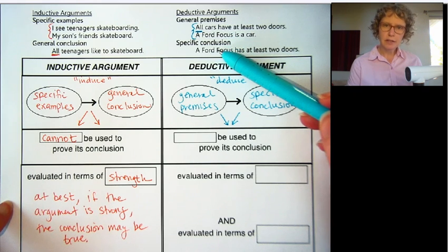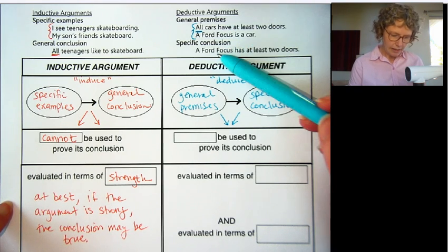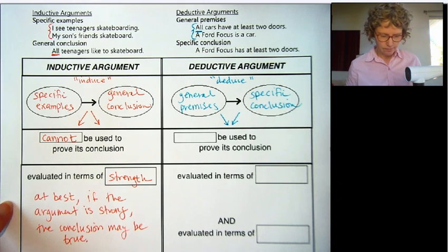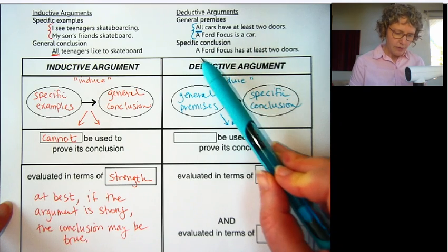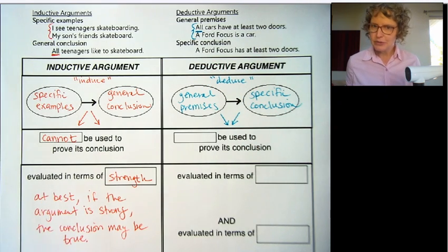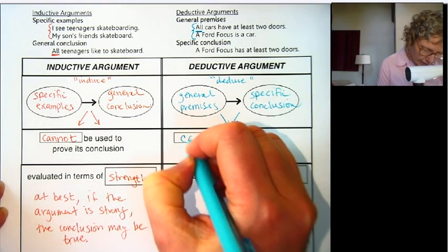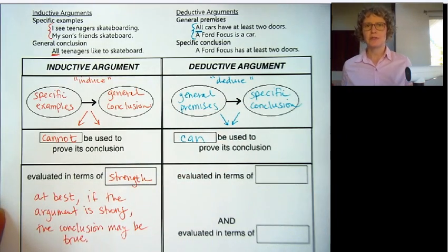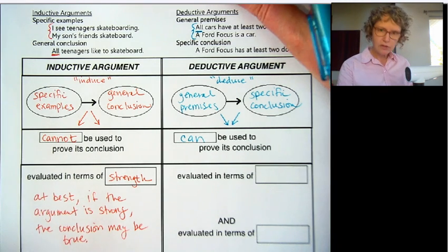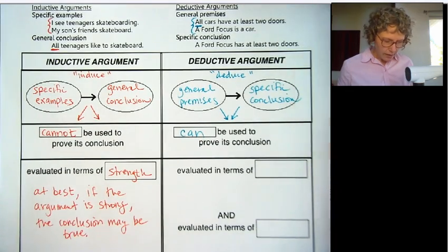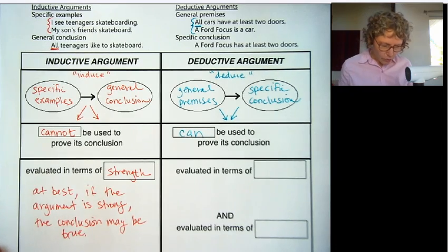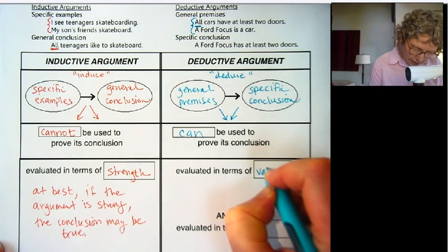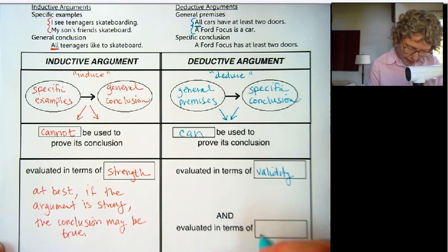Now the difference with a deductive argument is that we can use it to prove its conclusion. All cars have two doors, a Ford Focus is a car, therefore a Ford Focus has at least two doors — that follows. So we can use a deductive argument to prove its conclusion. We evaluate a deductive argument in terms of its validity and soundness.